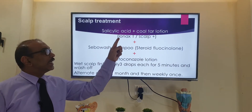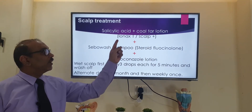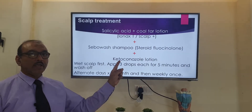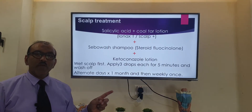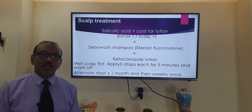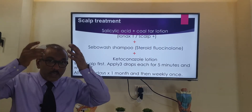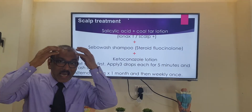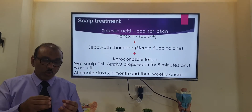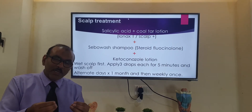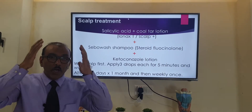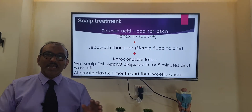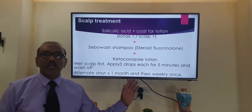The first lotion contains salicylic acid and coal tar. The second lotion contains a steroid, and the third lotion contains an antifungal. Take three drops from each of the three lotions, mix them thoroughly, wet the scalp and hair nicely, apply over the scalp and do a gentle massage for five minutes. The lotion must be applied to the scalp, not over the hair. Leave it for five to ten minutes, then take a head shower.